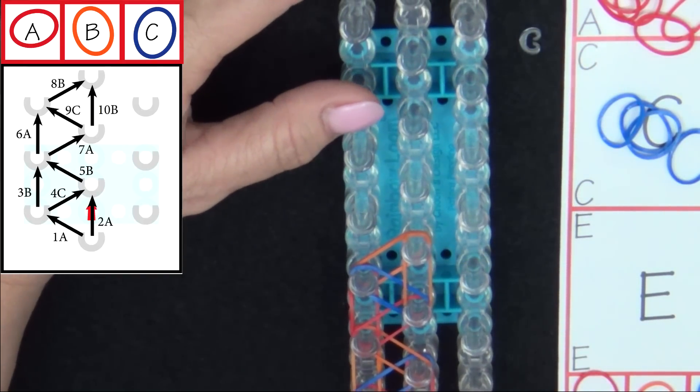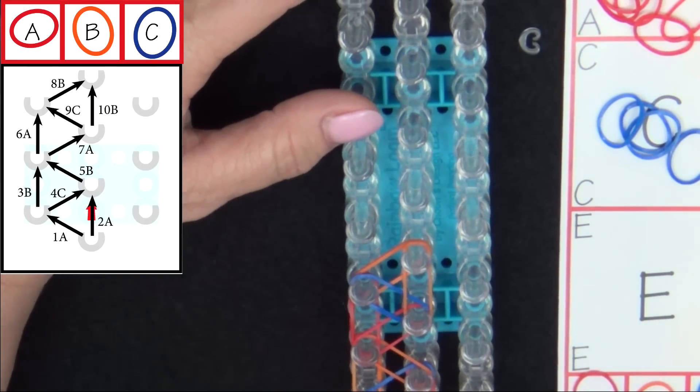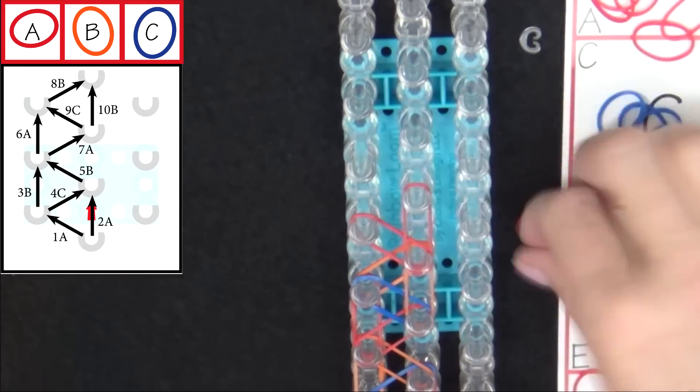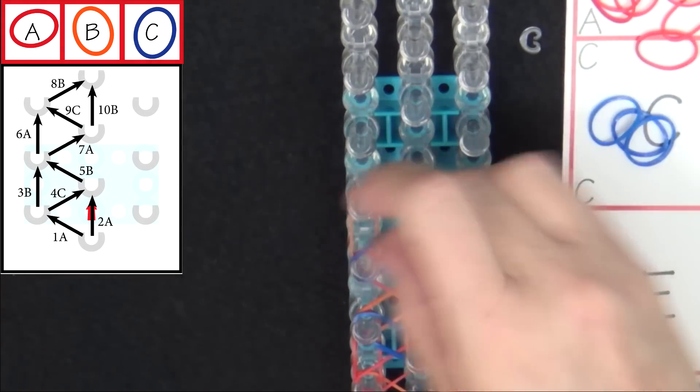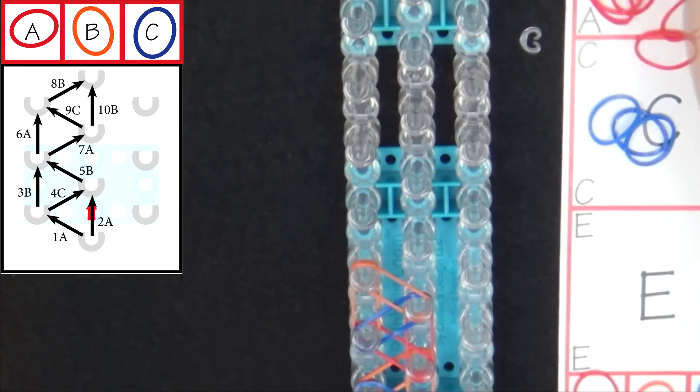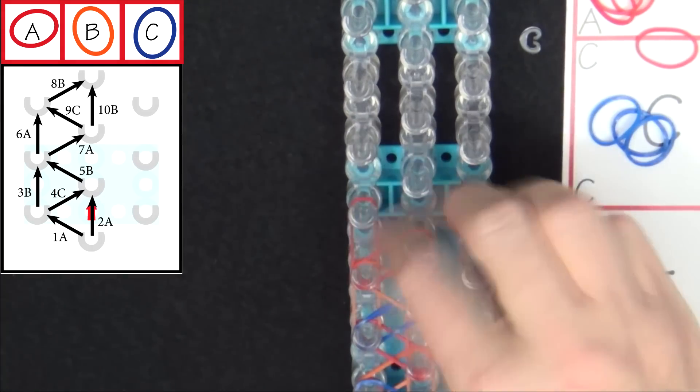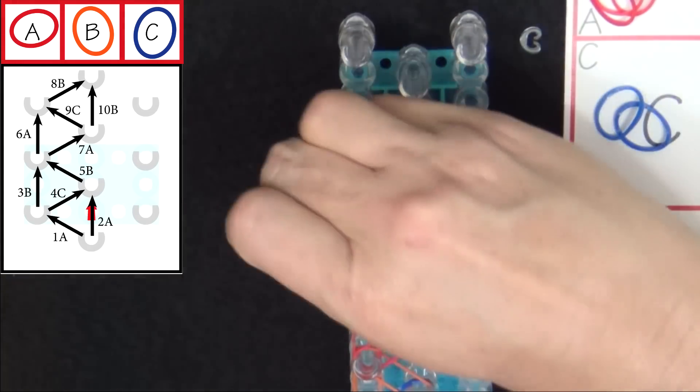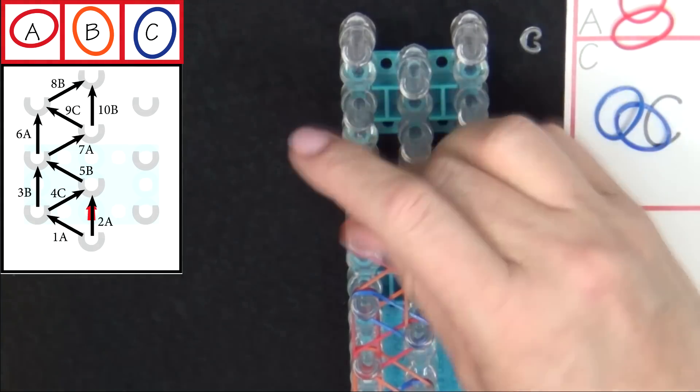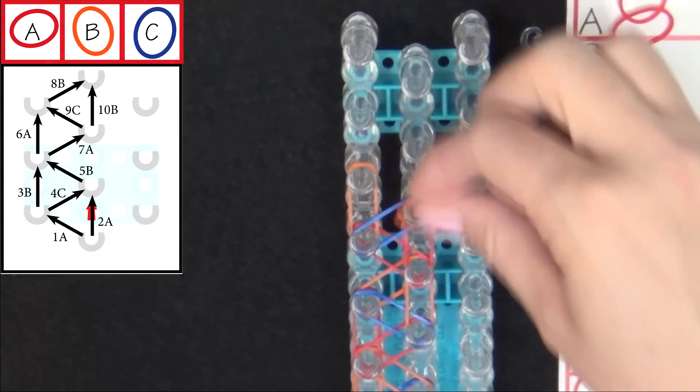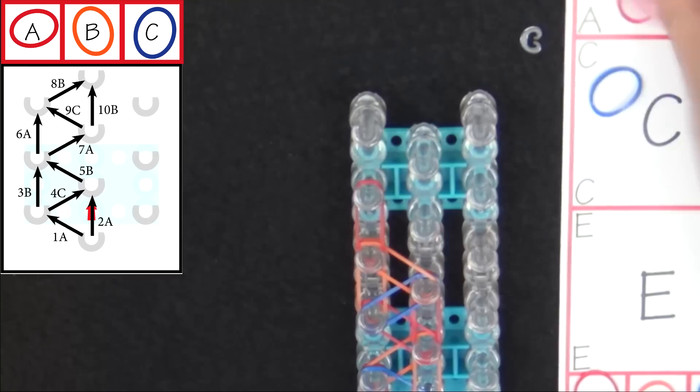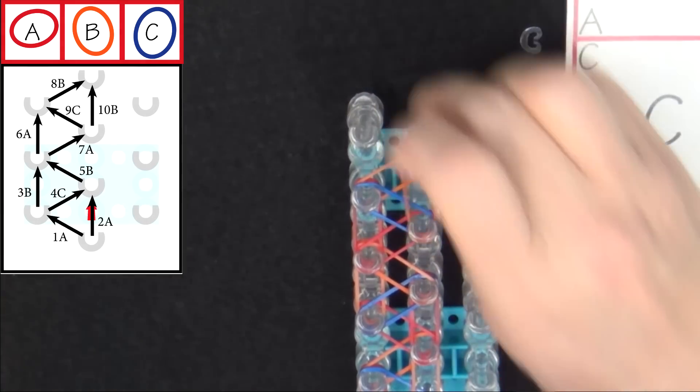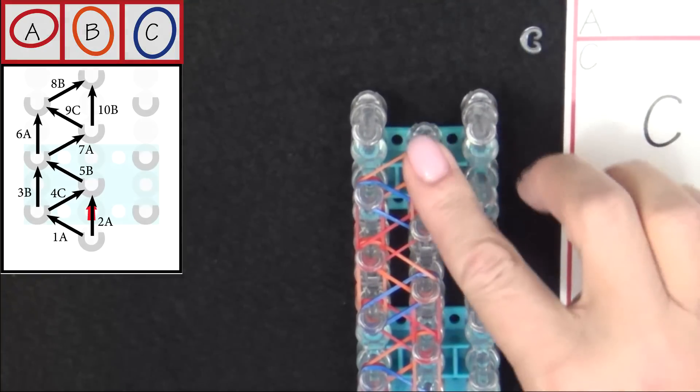Pause the video here and refer to the diagram until you reach the end of the loom. We'll fast forward from here. That last band to the center pin.